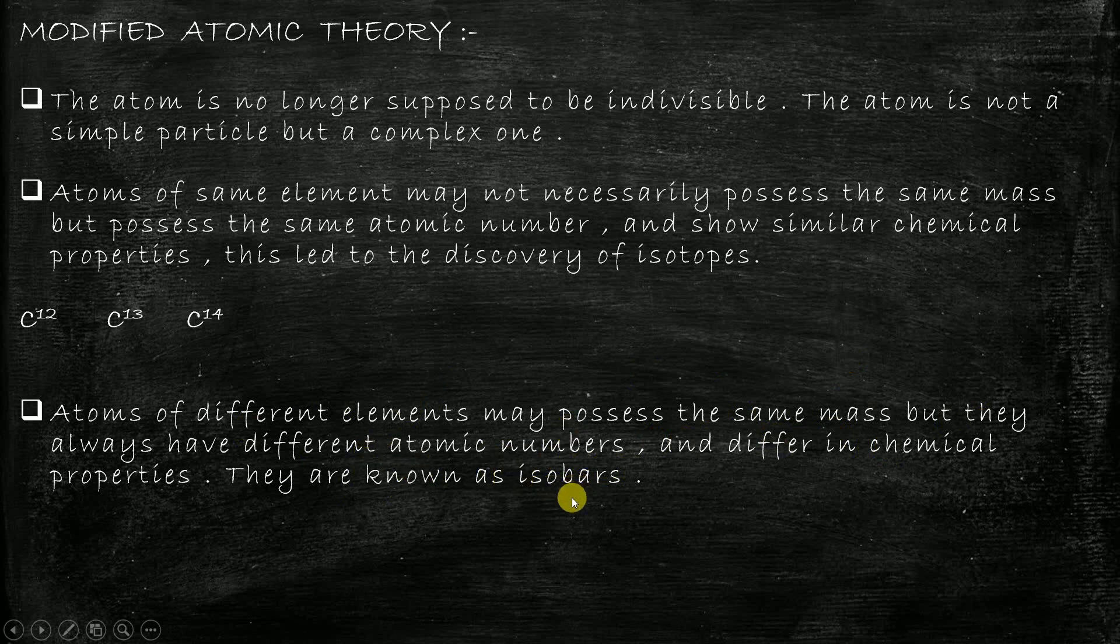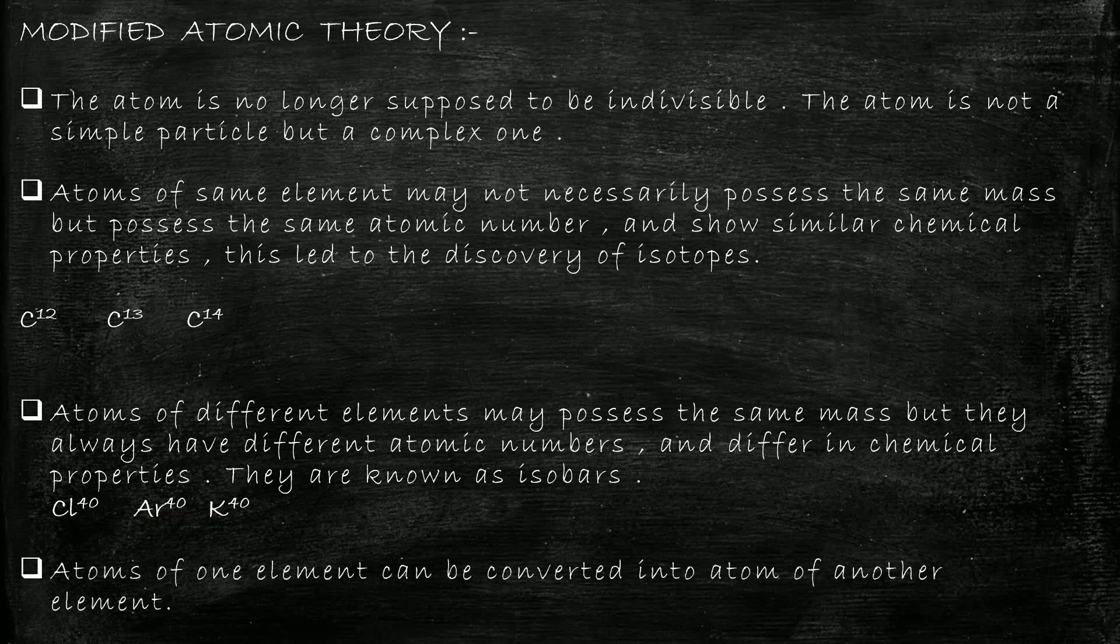Let's understand what isobars are. I have considered chlorine, argon, and potassium. Chlorine is having an atomic mass of 40, argon is having an atomic mass of 40, and potassium is also having an atomic mass of 40. So here, atoms of different elements are having the same atomic mass, but their atomic number is different. These are known as isobars.